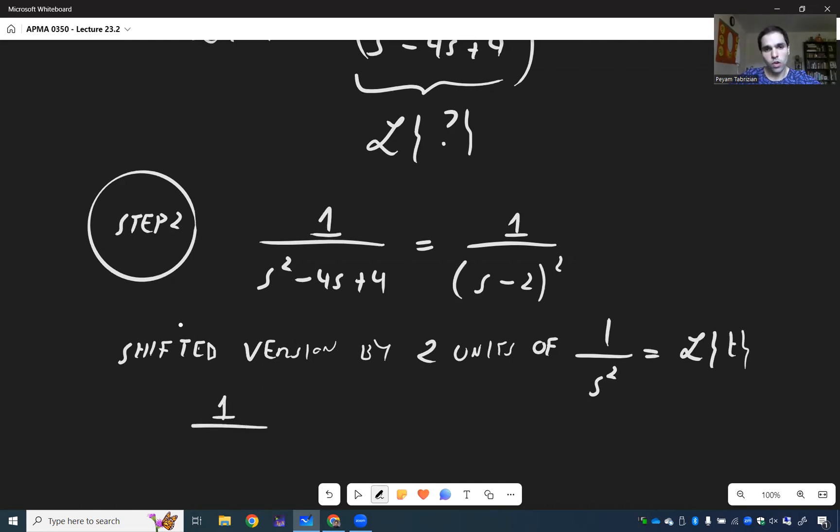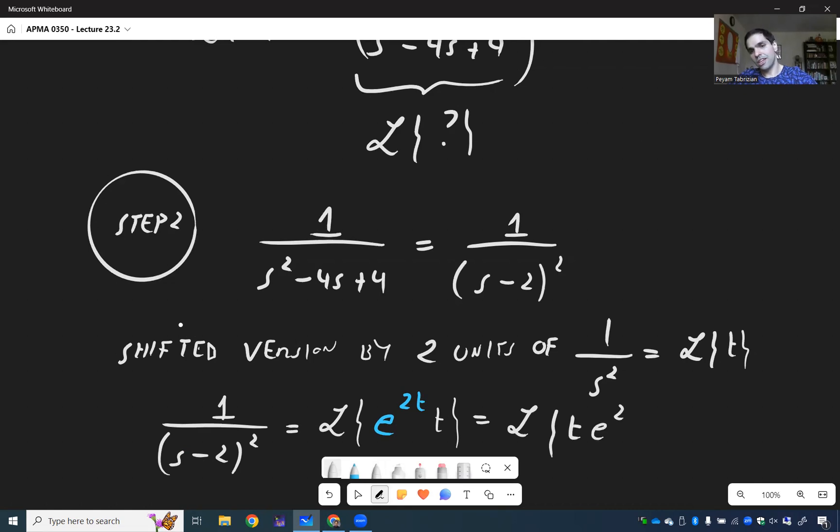And so 1 over S minus 2 squared becomes, as usual, we have this extra exponential term. So L of e to the 2t times t. But let's just write this as L of t e to the 2t. That's kind of an ODE form.